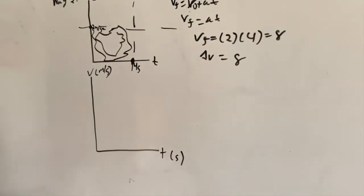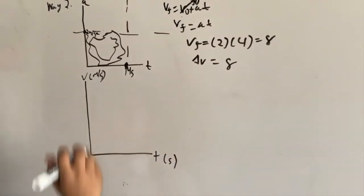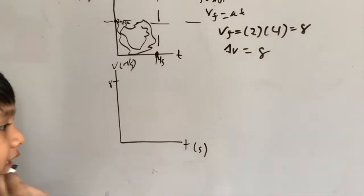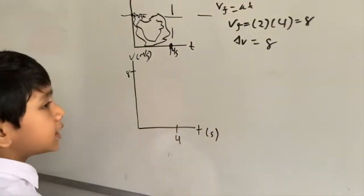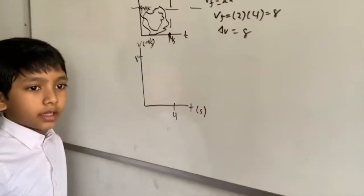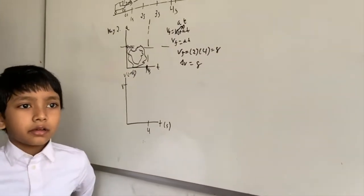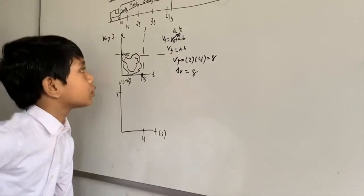So we know our maximum velocity is 8, right? We have to know the shape of this graph before determining the area because we all know it has to be some sort of thing.